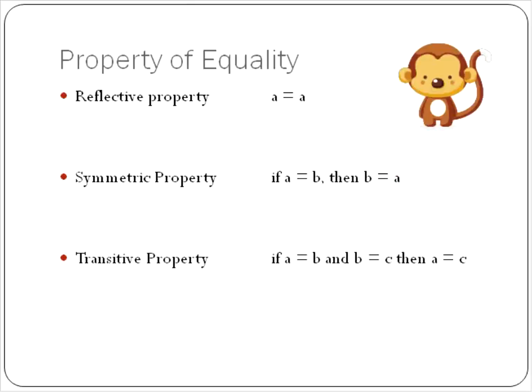And then there's the transitive property, and this one here, I think, needs a little bit more explanation. If A is equal to something, we'll call it B. If A is equal to something, and that same something is equal to C,